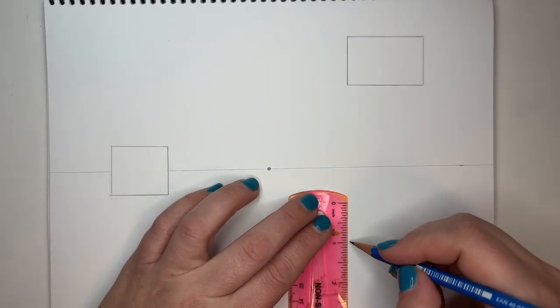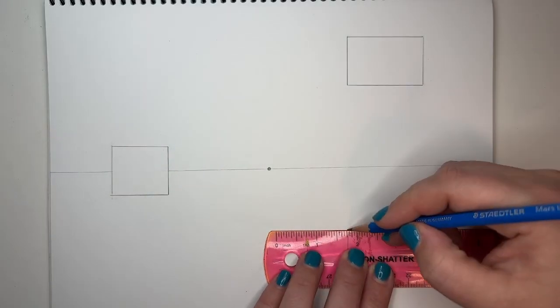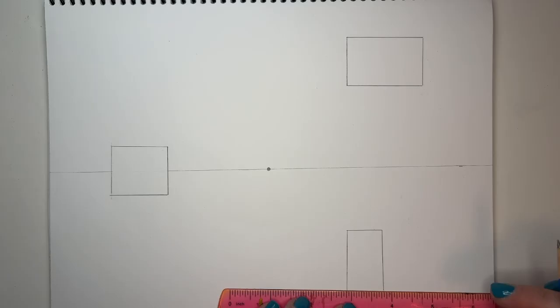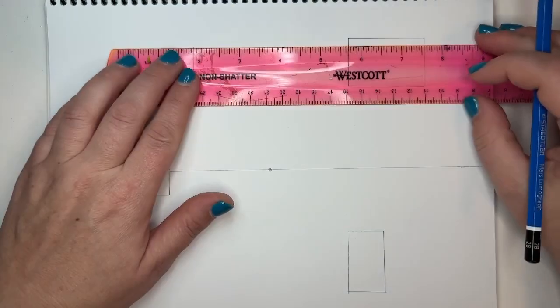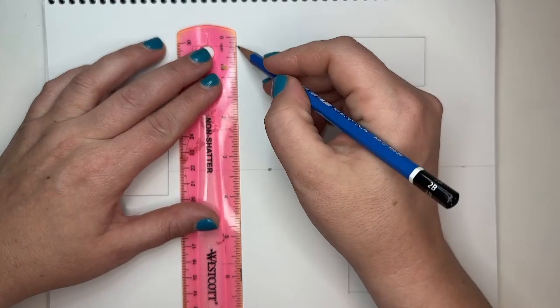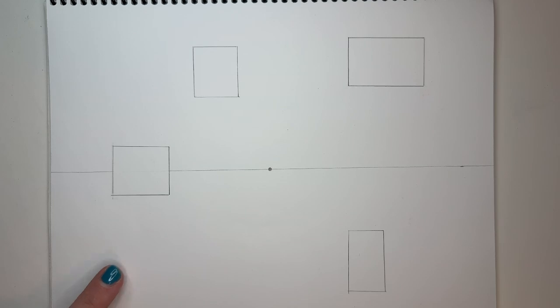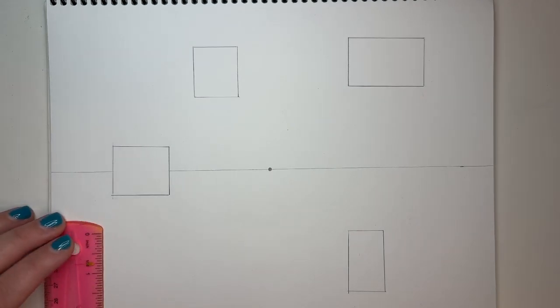I'm going to go ahead and draw a few more, you know, maybe trying one that's taller. And this one is going to be closer to the vanishing point than this one. Then maybe we'll put one in this far corner here.